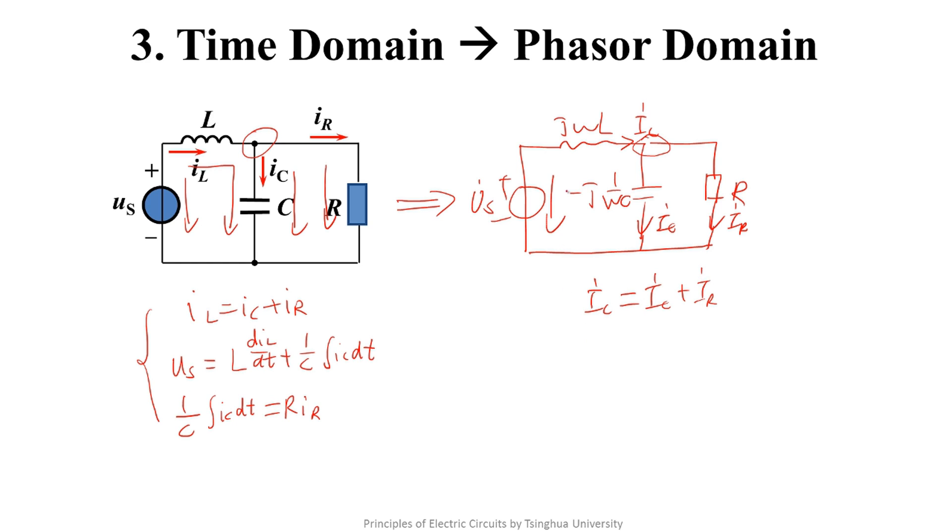By applying KVL to this loop again, we know that phasor US equals j omega L times phasor IL minus j times 1 over omega C times phasor IC equals R times phasor IR.